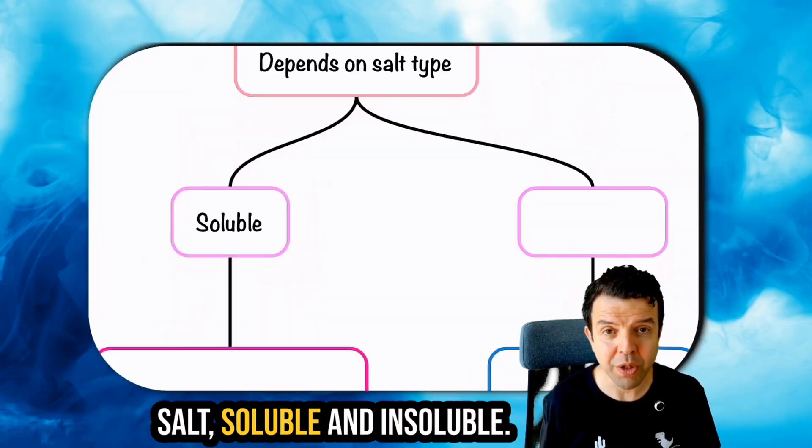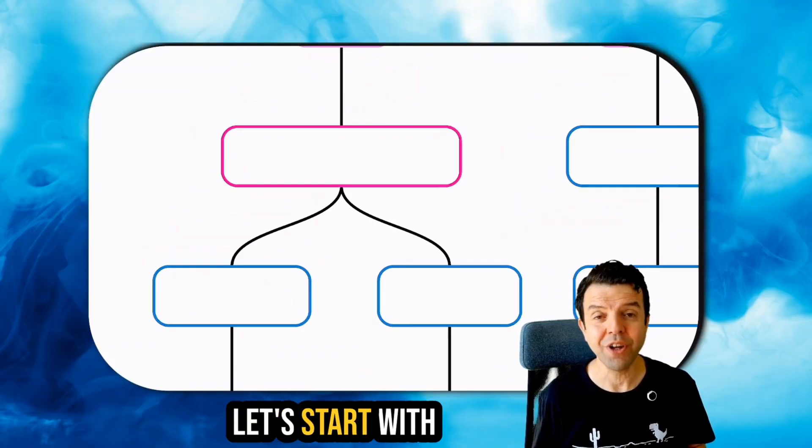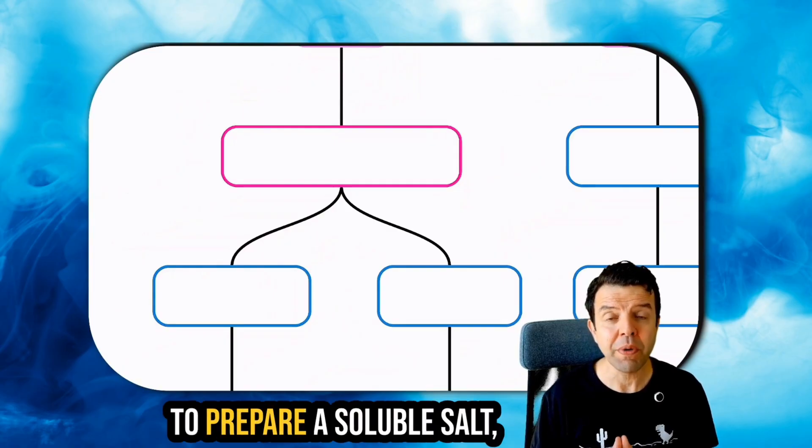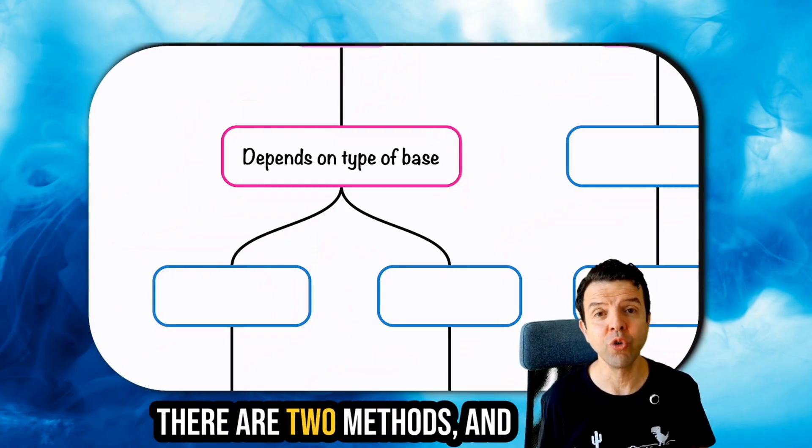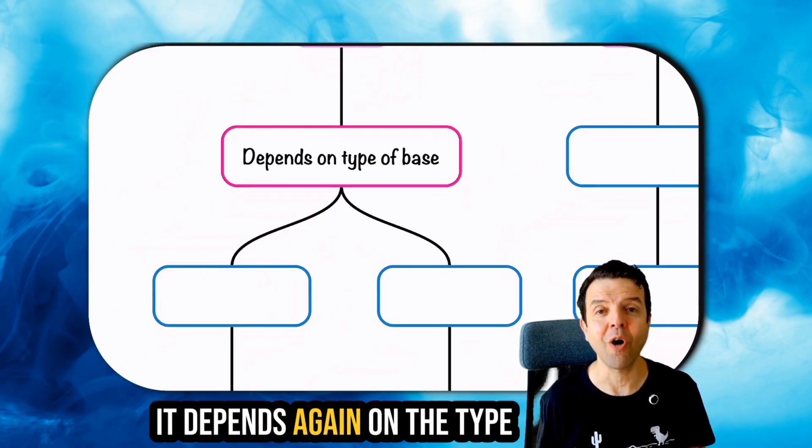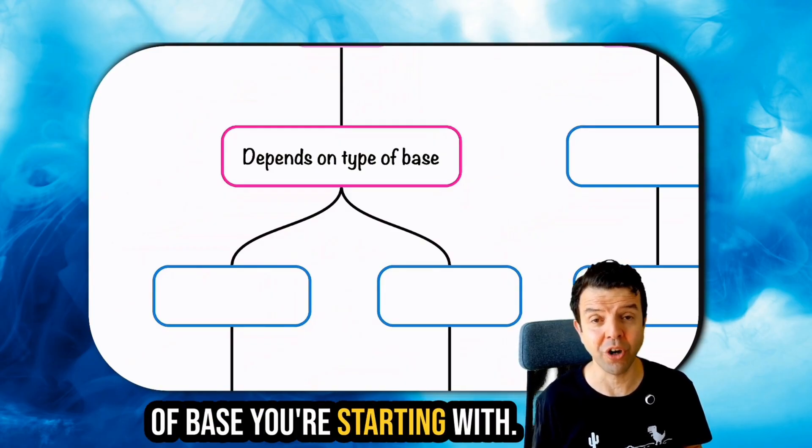There are two types of salts: soluble and insoluble. Let's start with the soluble salts. To prepare a soluble salt, there are two methods and it depends on the type of base you're starting with.